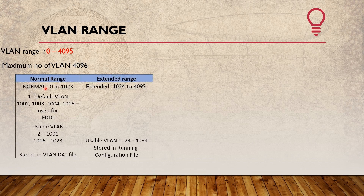VLAN has two ranges: Normal range and Extended range. Normal range is VLAN 0 to 1023. Extended range is VLAN 1024 to 4095. VLAN 1 is the default VLAN - all switch ports belong to VLAN 1 by default. VLANs 1002, 1003, 1004, and 1005 are reserved for FDDI and are isolated.